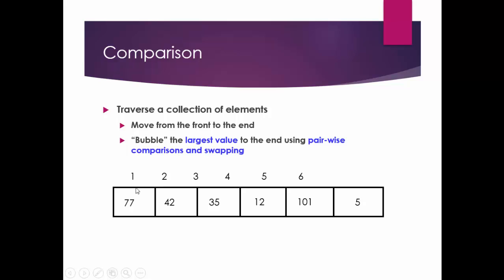In bubble sort, we need to compare each element with their consecutive element — the element next to them. If the left side element is bigger than the right side element, then we swap these two. After swapping, we continue to the next two elements.